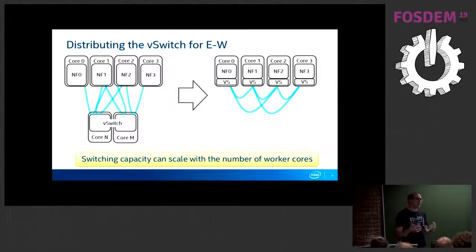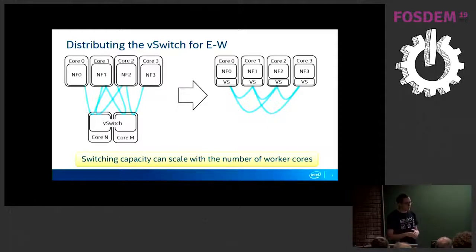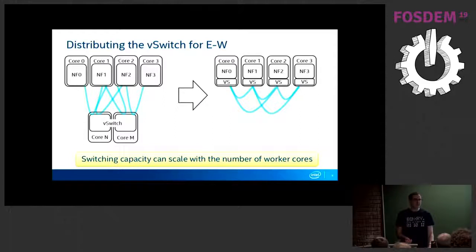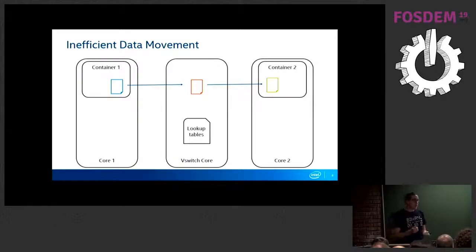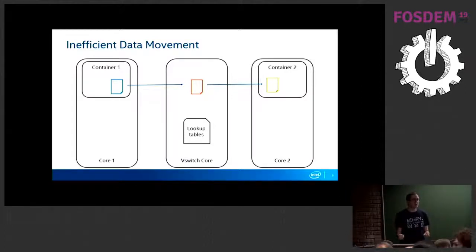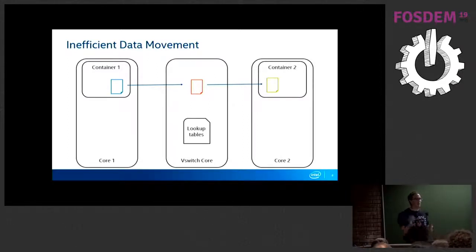If you have a workload using eight cores and your traffic rate goes up and you need to spawn additional instances, you are able to scale up the v-switching logic alongside that by co-locating them. There are also lower-level efficiency benefits for moving packets from one container to another. If we want to send a packet from container one on core one to container two on core two, we actually have to take two hops — from core one to your v-switching core, and then from your v-switching core to core two — with possibly two packet copies involved.